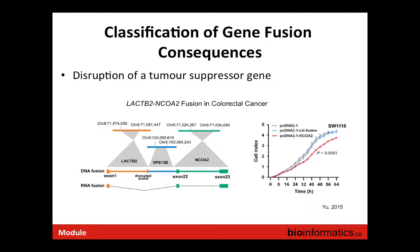Another class of gene fusion is disruption of a tumor suppressor gene. In this case, the fusion transcript is evidence that the wild-type genes are somehow being disrupted — through a translocation that interrupts or repositions the gene so it is no longer functional.